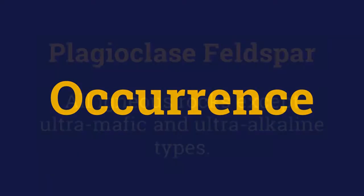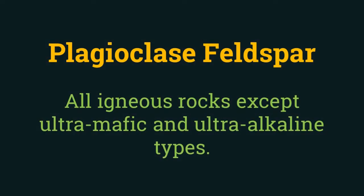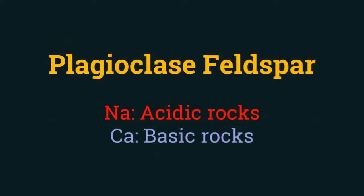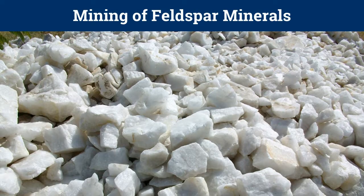Plagioclase Feldspar are found in all igneous rocks except ultramafic and ultraalkaline types. Feldspar are the most important group of rock-forming minerals and the dominant component of most igneous rocks. Feldspar containing sodium characterize the more acidic rocks whereas calcic Feldspar characterize the more basic rocks. Feldspar are mined from large granite bodies called plutonic peraloids found in pegmatites. These pegmatites are formed during the last fluid stages when a crystallizing granite becomes concentrated in pockets, allowing the growth of extremely large crystals. Feldspar are also extracted from sands composed of feldspar.